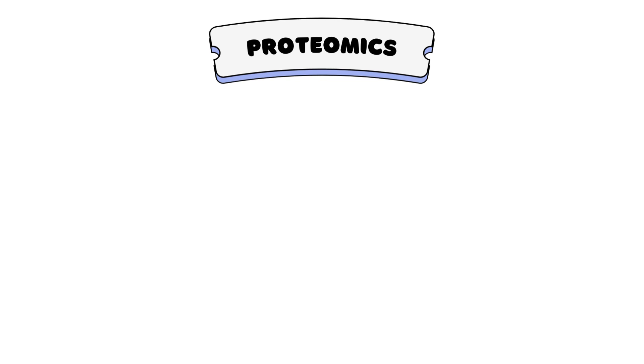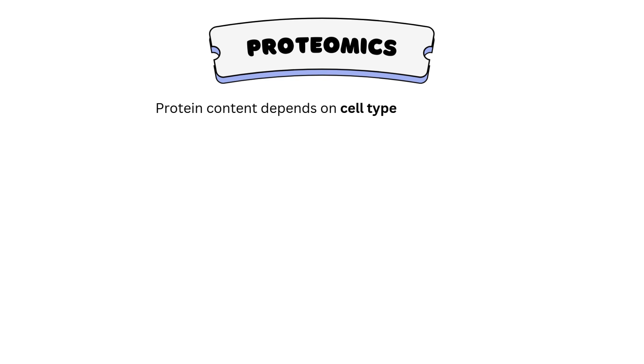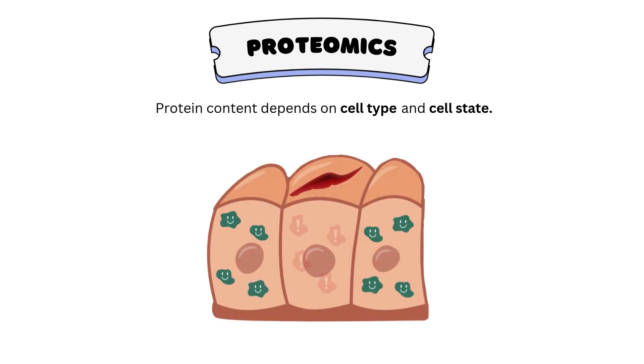The protein content of a cell depends in part on the cell type. For example, only red blood cells contain hemoglobin, the protein that carries oxygen in our blood. The protein content also changes in response to the state of the cell. An undisturbed skin cell will contain a different mix of proteins compared to a stressed skin cell that is sending out distress signals and recruiting healing factors.